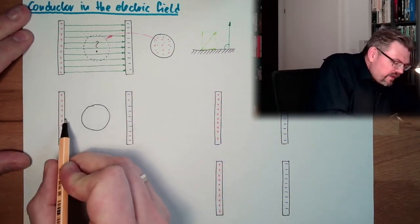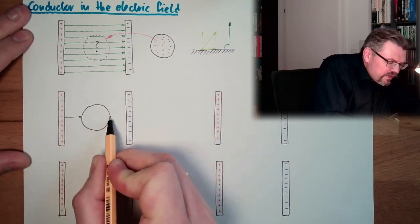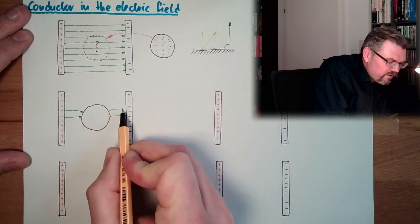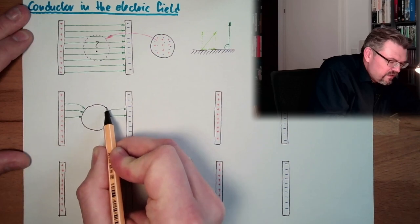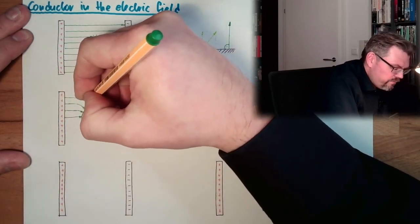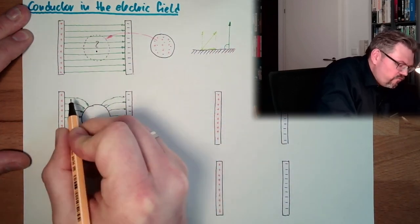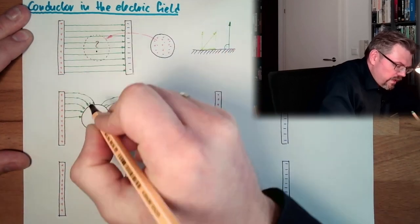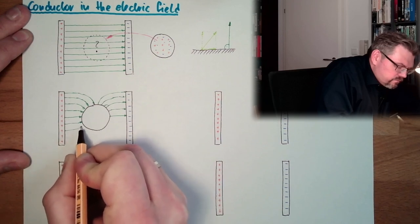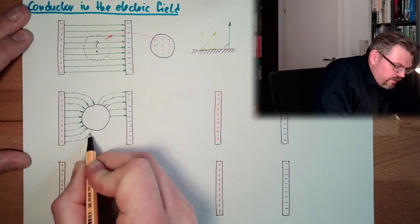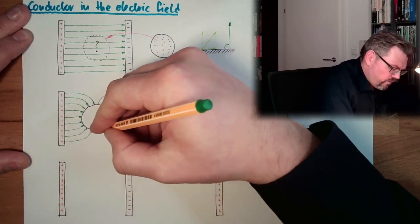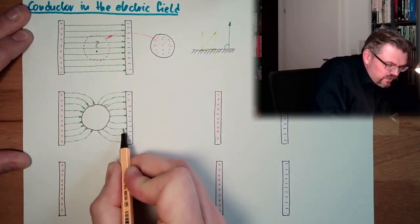What does this mean for our homogeneous field? The middle field line enters rectangular and exits rectangular. The next one gets deformed — it will curve down, entering rectangular and leaving rectangular. So the previously homogeneous field will be deformed around the conductor, but we always have 90 degrees at the surface. This is how it would look like in principle, with always perpendicular entry into the conductive material.